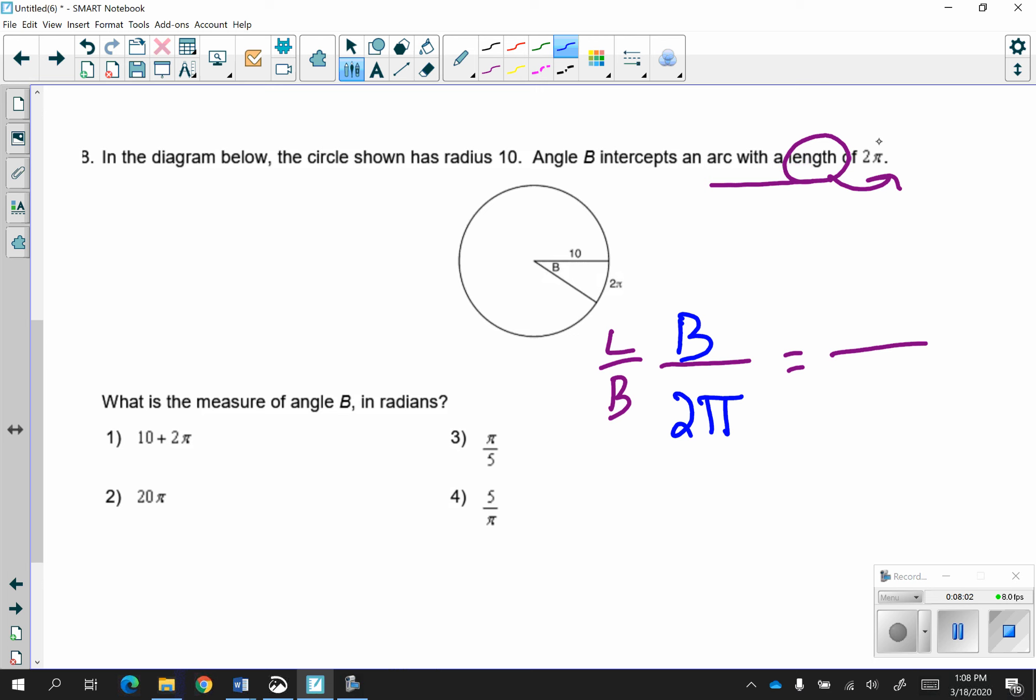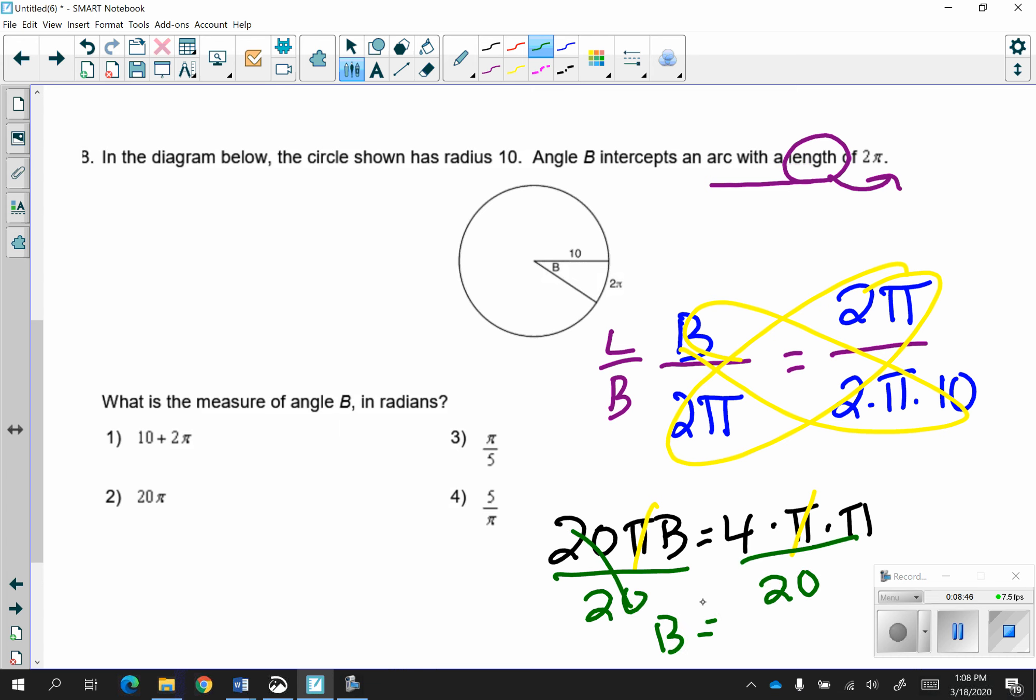Do I know the length of the arc? I do. That was given as 2 pi. And then, since it's arc length, it's the circumference, so it's 2 times pi times the radius. I'm going to cross-multiply. And I get 20 times pi times B is equal to 4 times pi times pi. Let's see. I have a pi here and a pi here. I can get rid of those. Now I will divide by 20 to get B by itself. And B is equal to 1/5 pi. So remember that pi over 5 is the same as 1/5 pi.